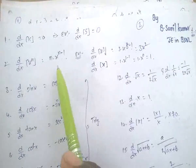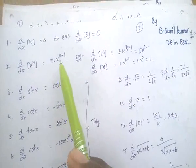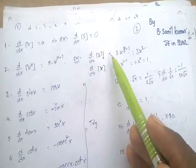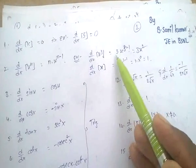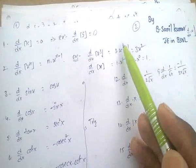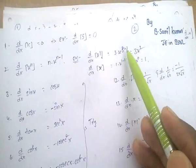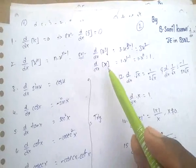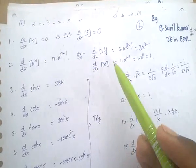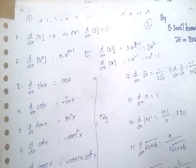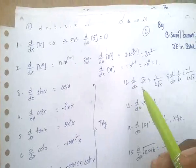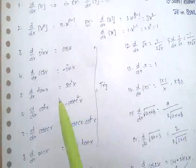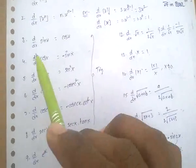d/dx of x^n equals n into x^(n−1). For example, d/dx of x³ equals 3 into x^(3−1), which is 3x². And d/dx of x is nothing but 1.